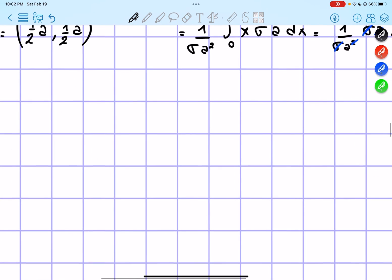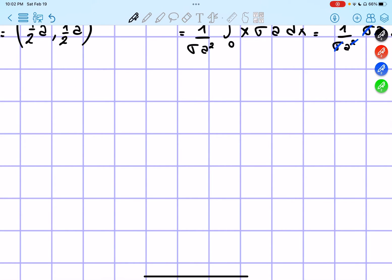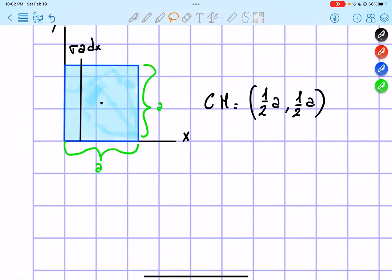Now, for y, we're actually going to have to do the same thing. So, the y-coordinate of our center mass will be equals to 1 over capital M, integral of y dm. Now, dm actually is a little different in this case, because instead of taking a line like this, we're going to take a horizontal line.